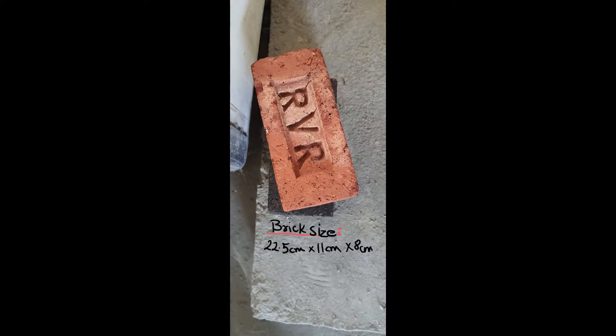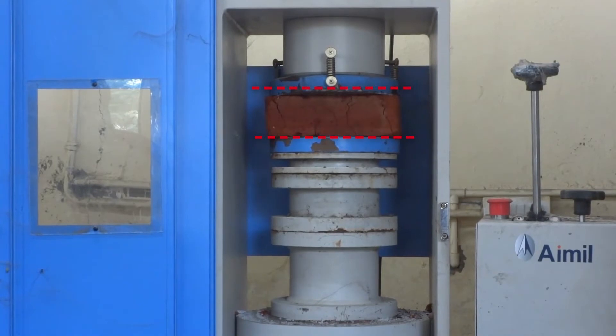In this video we shall see how the compression testing machine compresses bricks and at what loads bricks give up. Our first brick has dimensions 22.5cm x 11cm x 8cm. Let's put this in our compression testing machine.